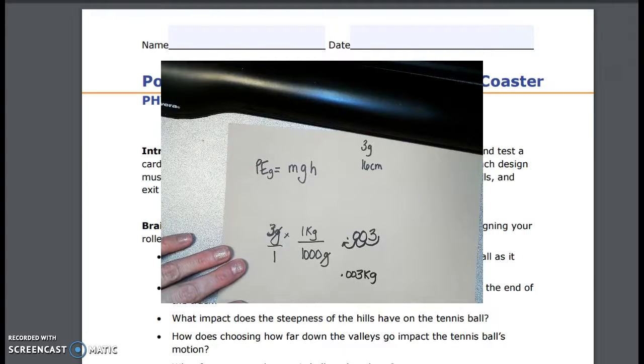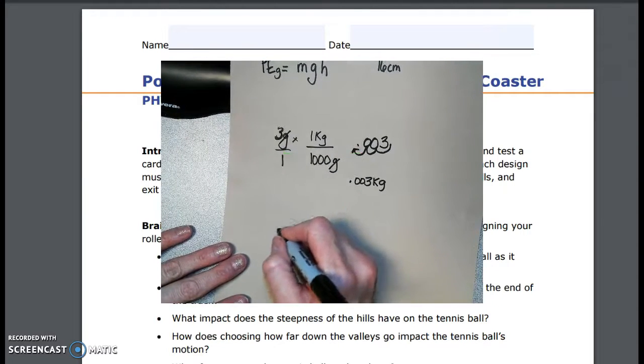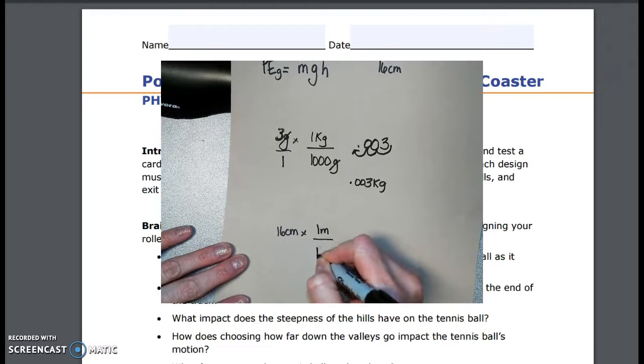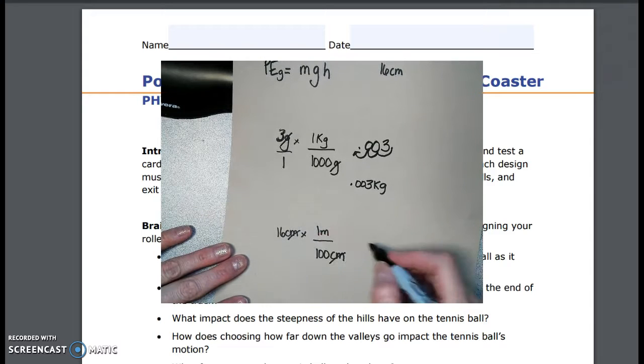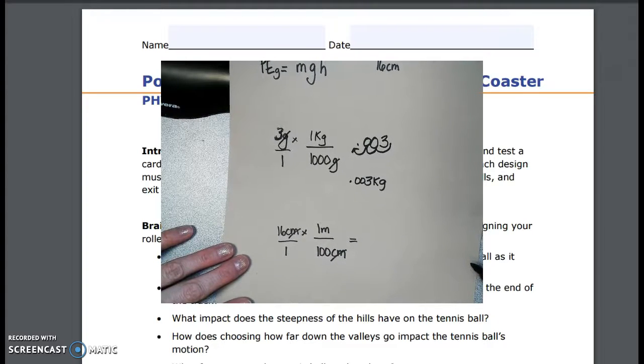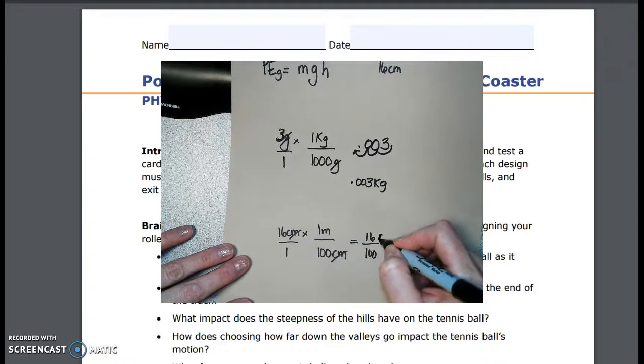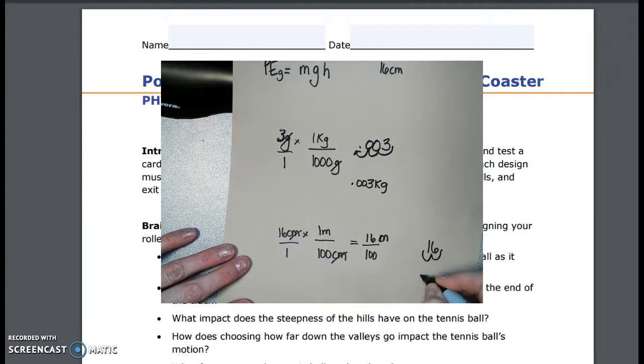As far as the centimeters goes, we have 16 centimeters. One meter has a hundred centimeters. So centimeters are going to cancel, and that one, by the way, is just a placeholder. I'm going to take 16 divided by a hundred. I keep saying a thousand, and I mean a hundred. To move the decimal point two places to the left. So 16, there's the decimal points over there, even if you imagine it. One, two, point one six meters.